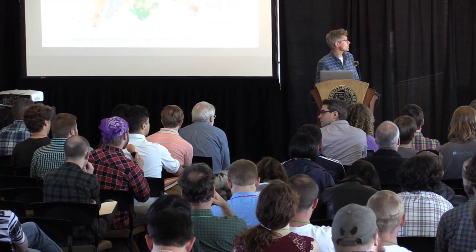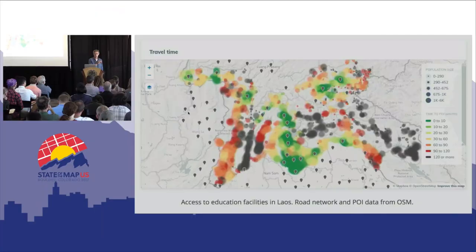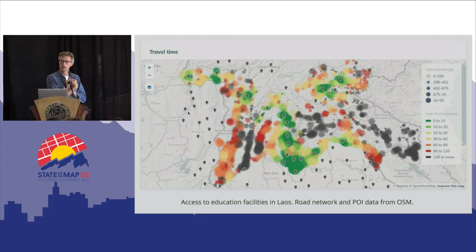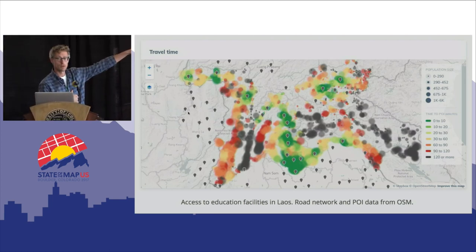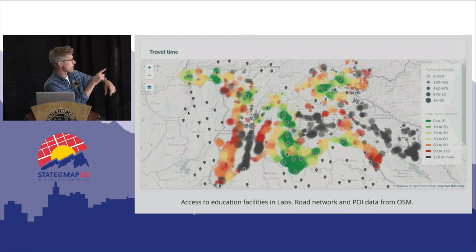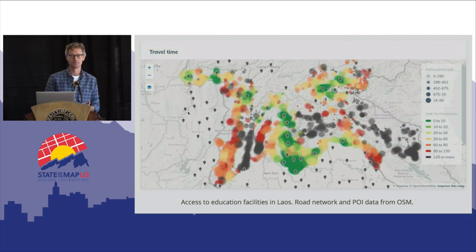Question: I couldn't make out the legend — could you narrate the Laos image? Answer: All the colored dots are the origins — in this case, villages in Laos. The size of the bubble represents population size, with quintile-based sizing on the right. The color represents the travel time to the nearest POI. The gray POI markers on the map indicate the destination points — in this case, education facilities.